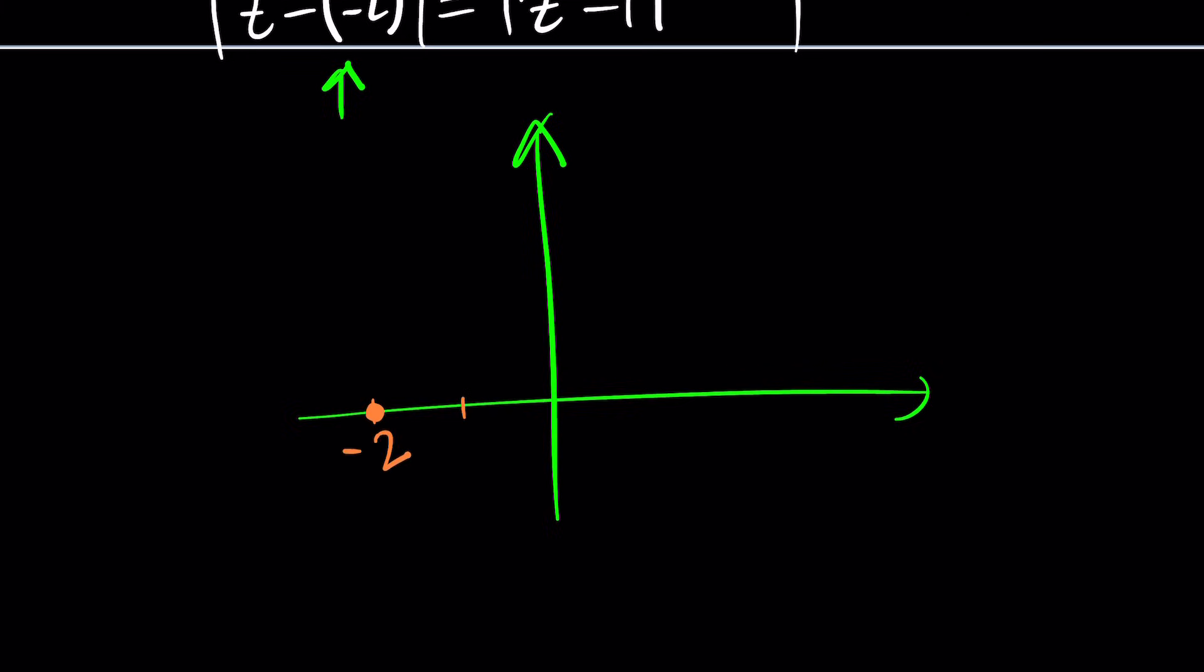And the distance between Z and 1, which is this. So you're basically looking for a number, a complex number, whose distance from these two points are the same.